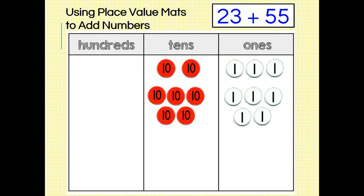Now I can go ahead and total my chips in each place value column. I have seven tens disks and eight ones disks, so 23 plus 55 equals 78.